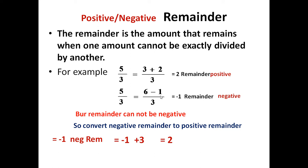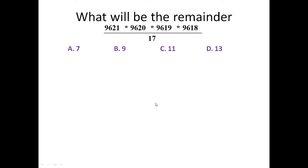So friends, we are going to use this technique for solving different problems. Let us take the first problem: what will be the remainder if 9621 × 9620 × 9619 × 9618 is divided by 17? Four options are given: 7, 9, 11, and 13.